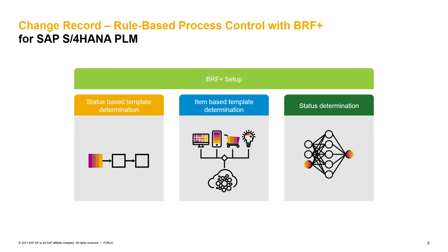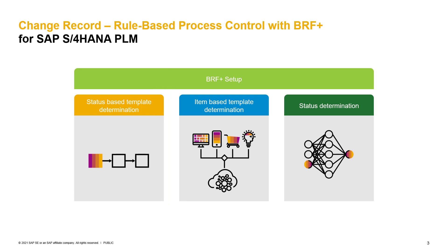This will also include a setup of importing and exporting parameters as well as defining a decision table. We will run through the following three BRF+ setups. The first one is the setup of a status-based template determination, meaning that based on a change record type and a change record status, a defined process route template gets loaded. The second example is an item-based template determination — based on a change record type, a change record status, and a change item, a defined template gets loaded into the process route.